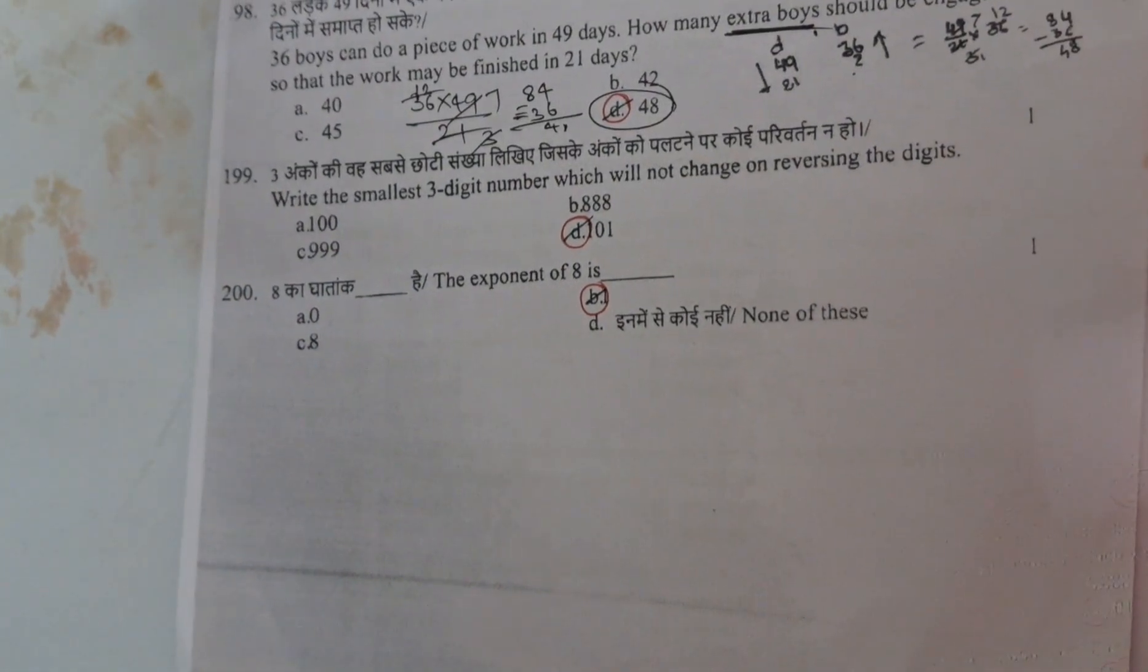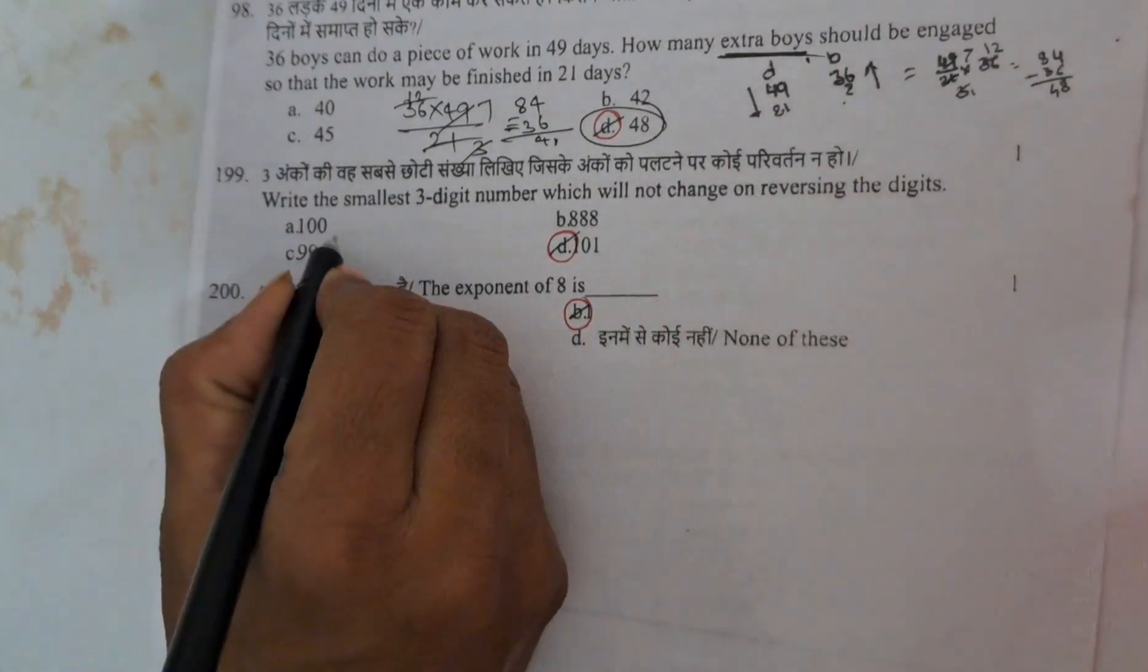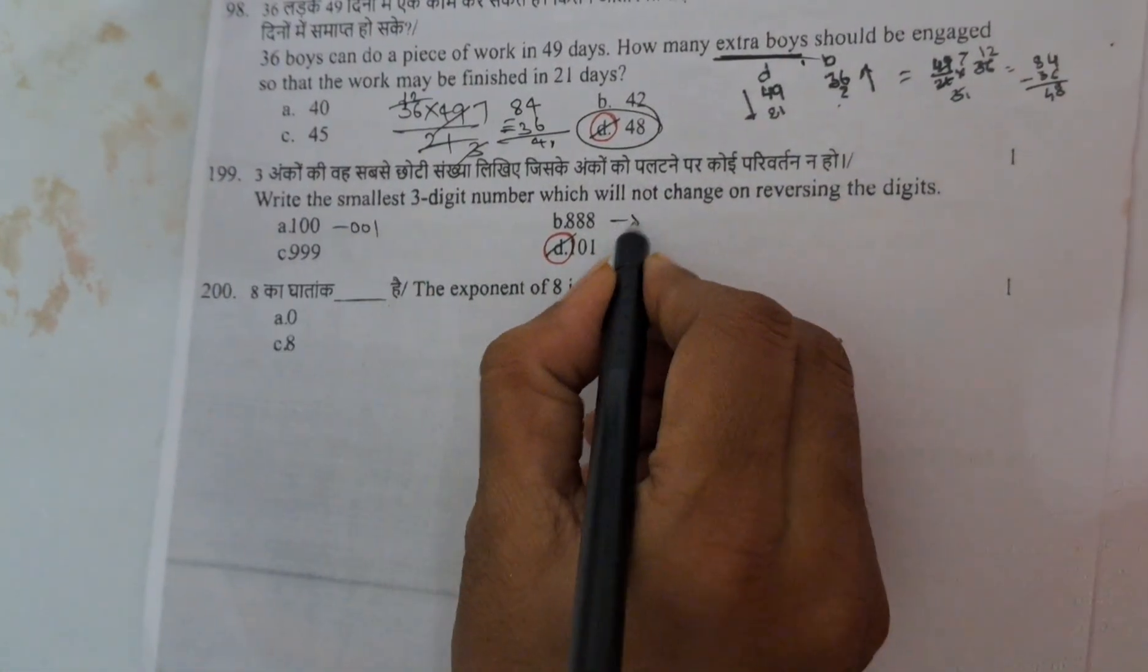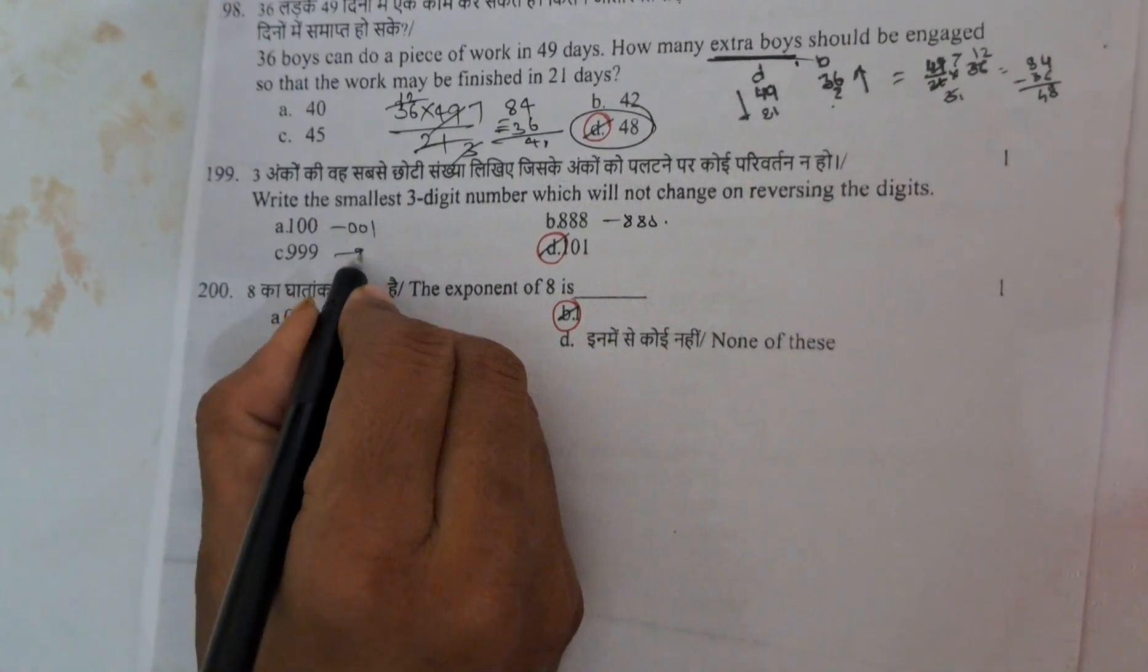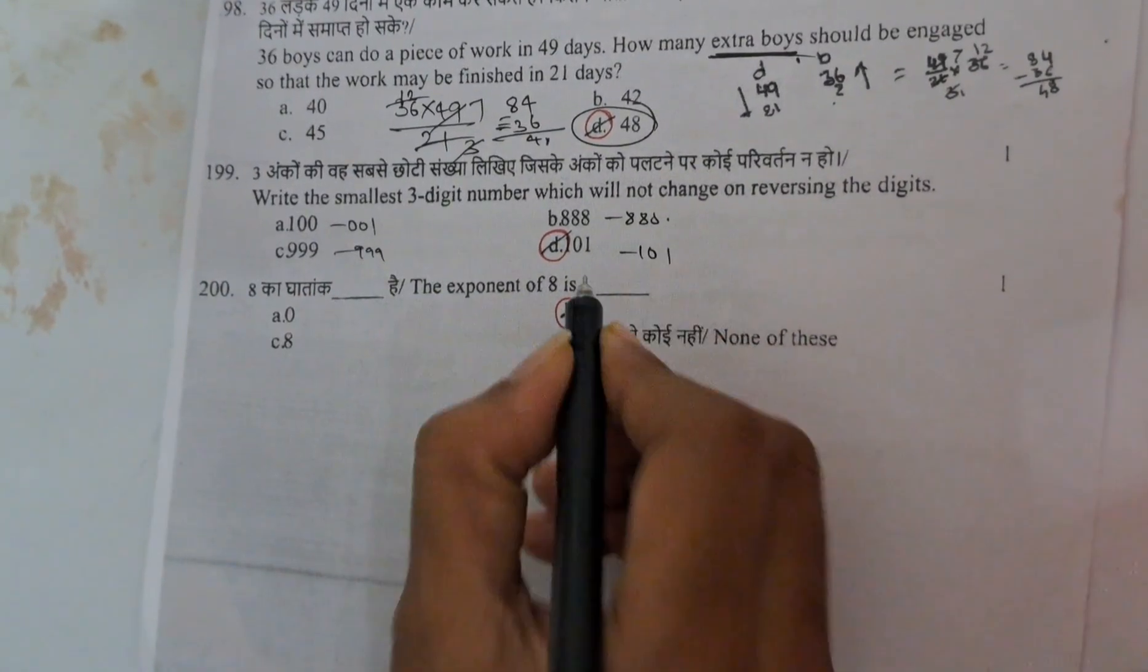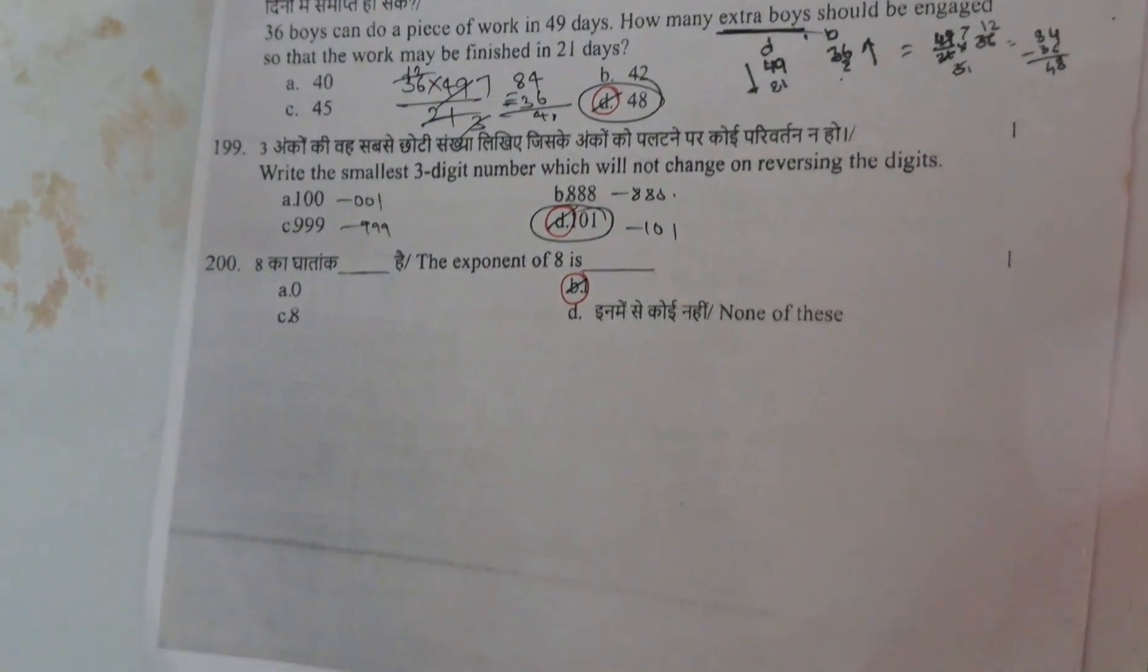Write the smallest 3-digit which will not change on reversing the digits. If you write reversing, it will change. If you write the reverse, it is not changed. Here it is also not changed. But here they are asking smallest. That is the reason this.